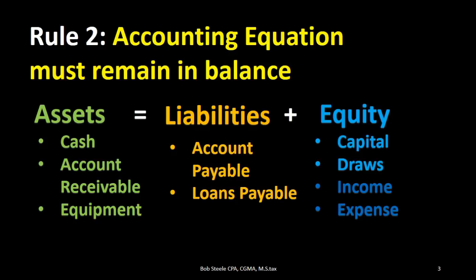Rule two: the accounting equation must remain in balance. So whatever transaction we have, there are going to be two accounts affected — and assets must always equal liabilities plus equity. The accounting equation must always remain in balance.